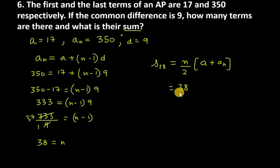So N is 38, 38 over 2. A is 17 and an is 350. So 38 over 2 is 16, and on the other hand you have 367.